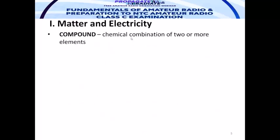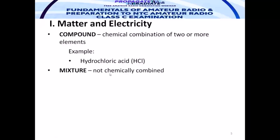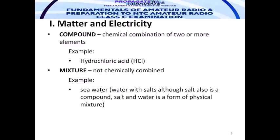A compound is a combination of two or more elements. For example, hydrochloric acid — popularly known as muriatic acid — consists of hydrogen and chlorine. A mixture is also a combination, but not chemically combined. For example, seawater: water with salt, although salt itself is also a compound. Salt and water form a physical mixture — you can separate them physically by heating or distilling.